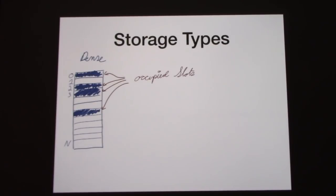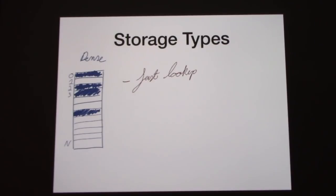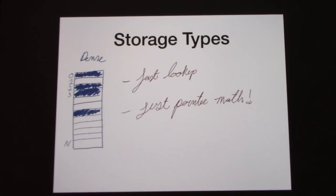An important part of an ECS is how data is stored and arranged in memory. Typically we have a dense storage table with some occupied slots per entity per index and some wasted or unused slots. This is implemented as a vector because it's simple pointer math — just an addition, maybe a multiplication or a bit shift — to get to the value very quickly. It also keeps similar values close together in memory, which makes cache lookups more efficient.